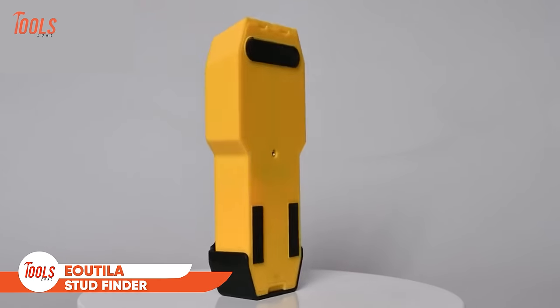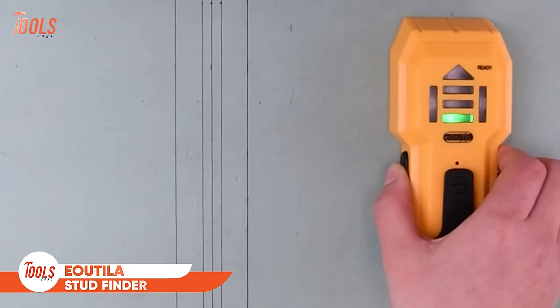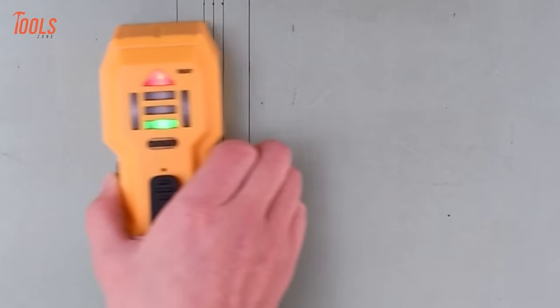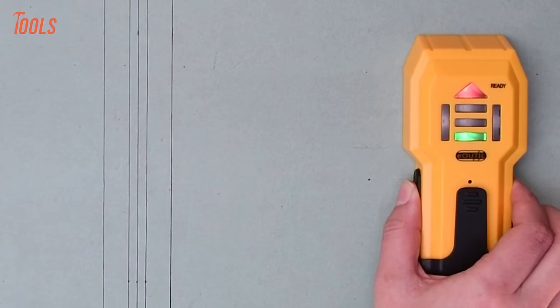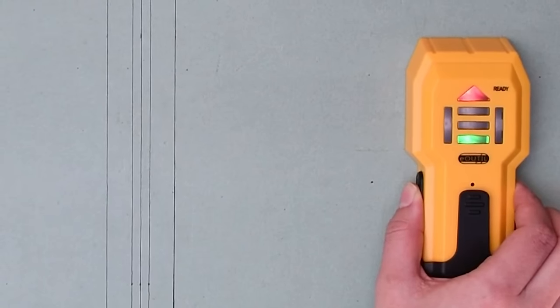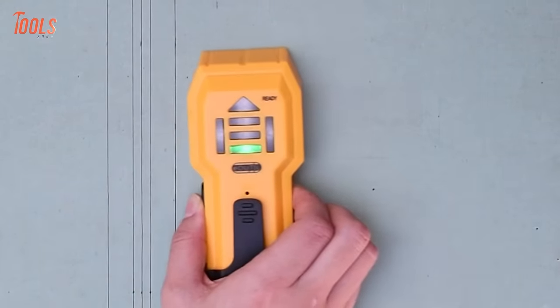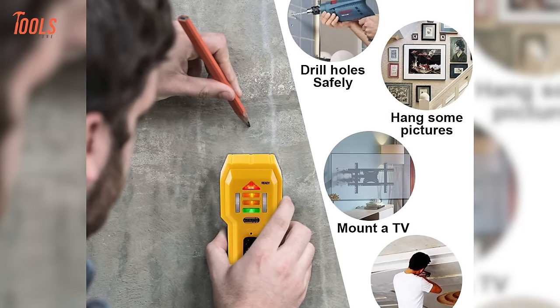Next, we have the EUTILA stud finder, which is a must-have tool for any handyman. It quickly finds wood or metal studs hidden behind walls. This lets you securely mount shelves, cabinets, and other fixtures. Using the stud finder is simple. All you have to do is slide it along the wall until it detects a stud. Audio beeps and lights show exactly where the stud is located, so you can anchor your hanging object securely.